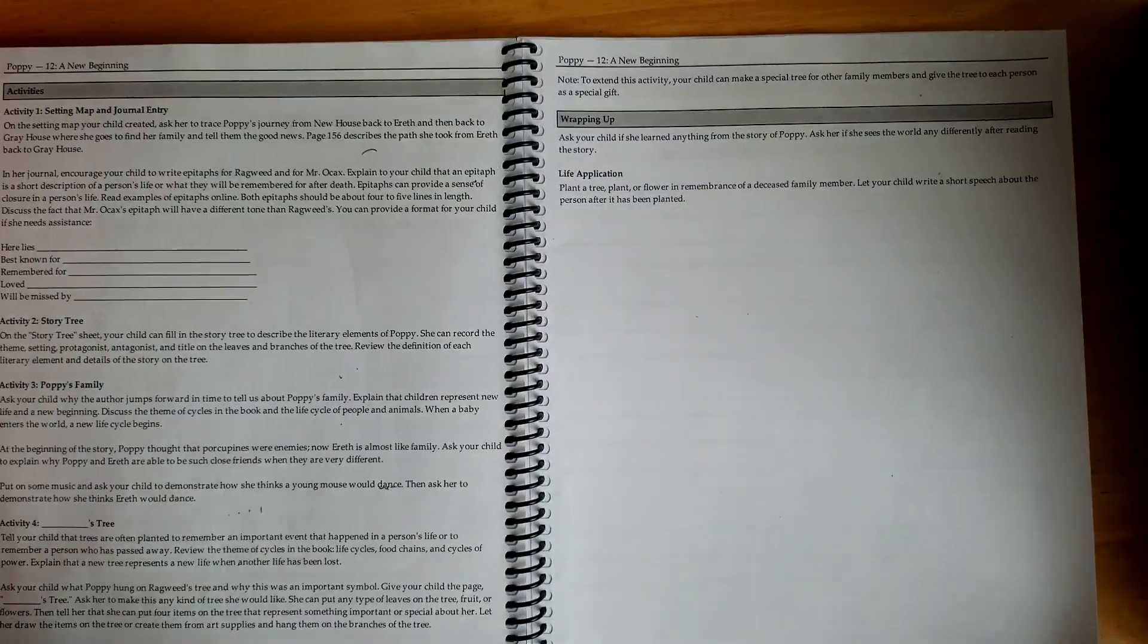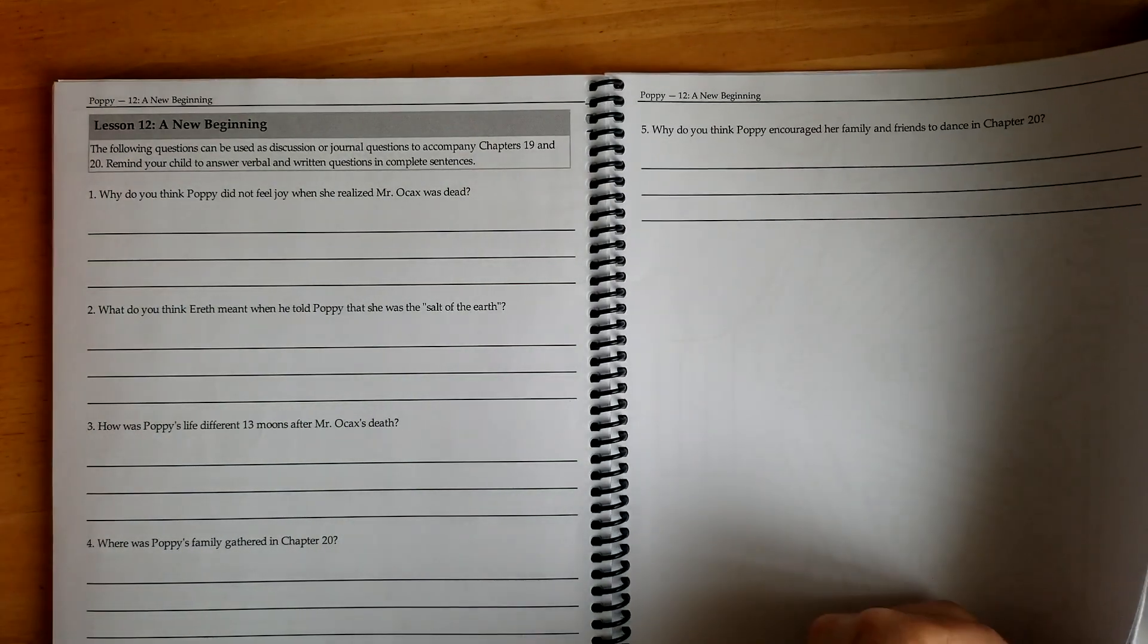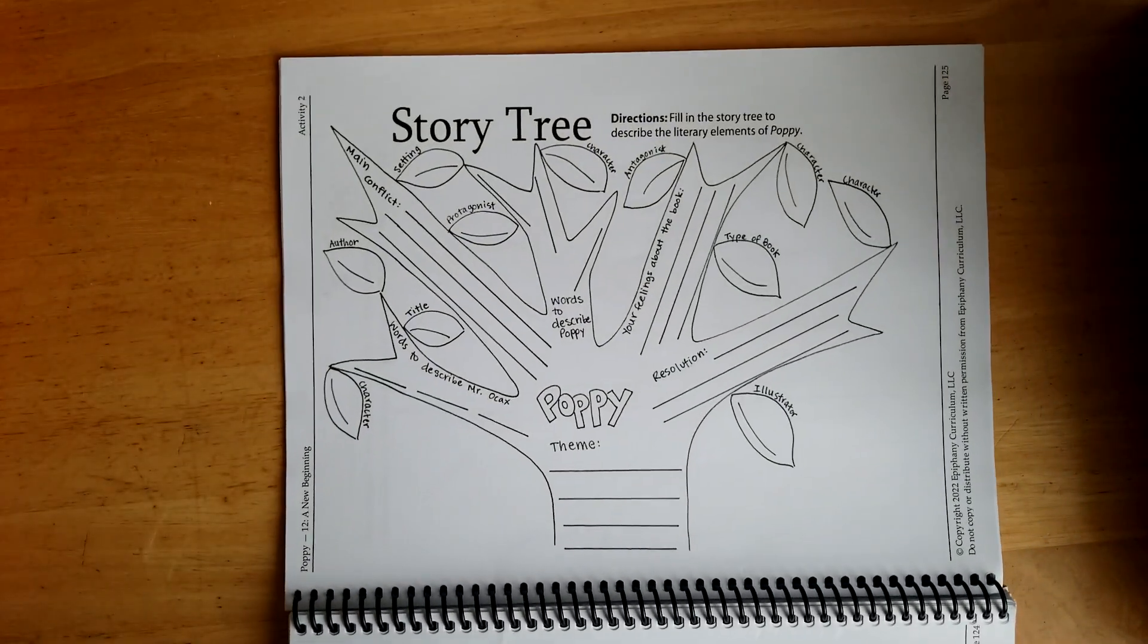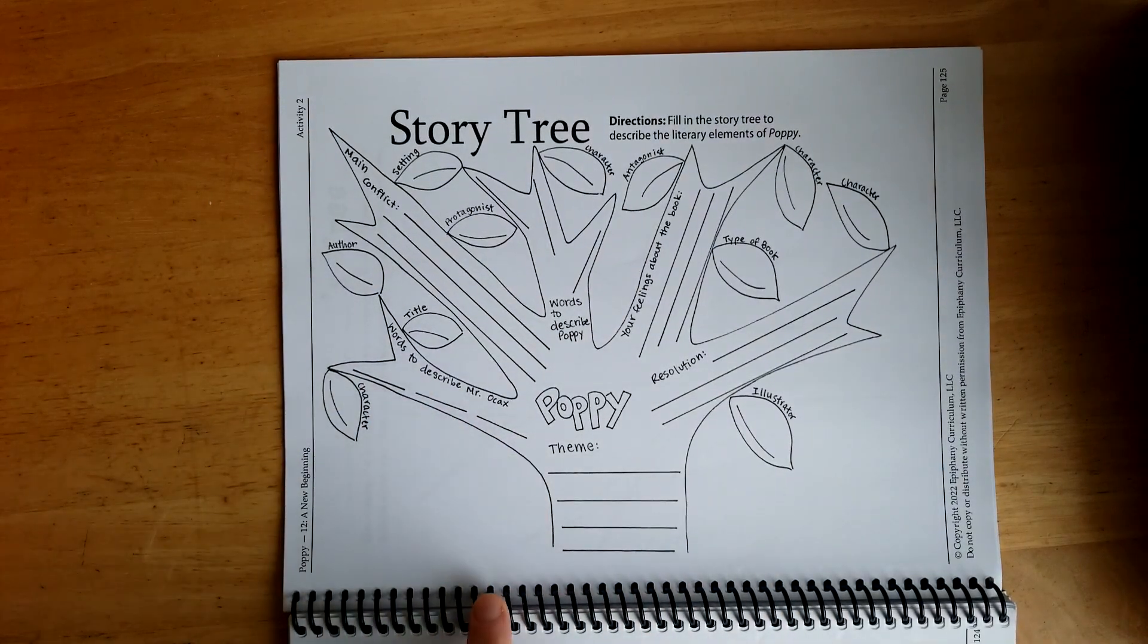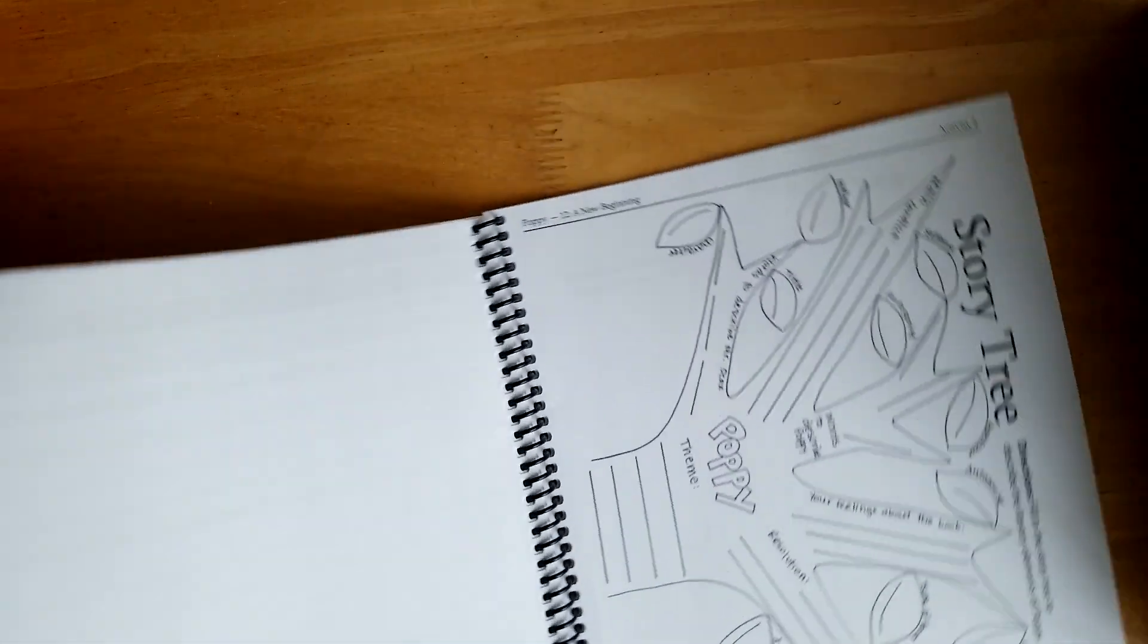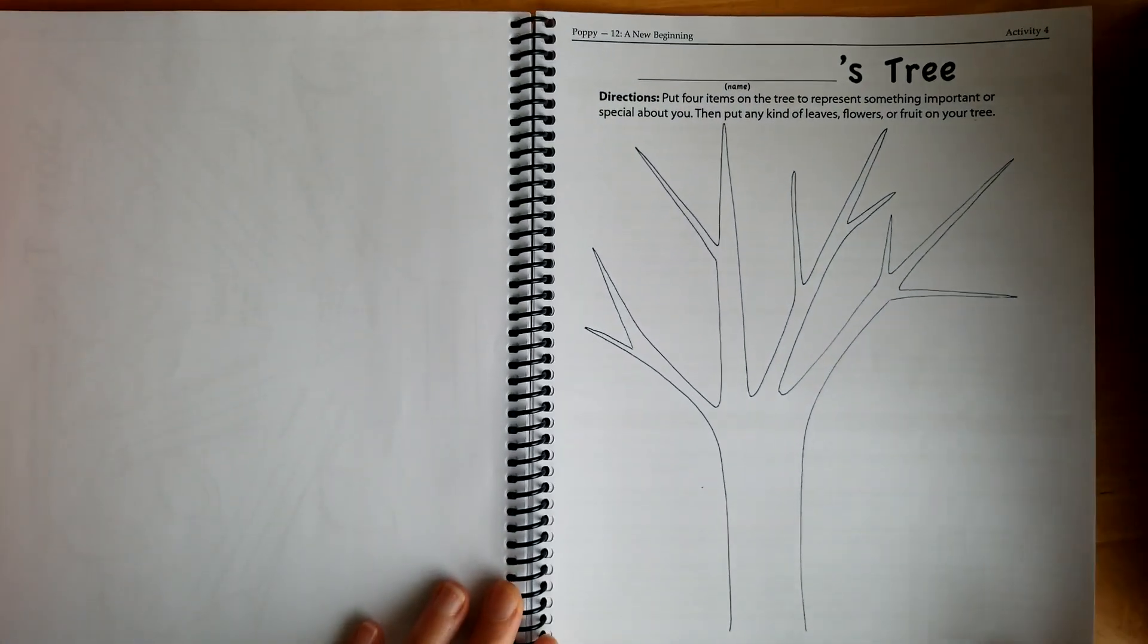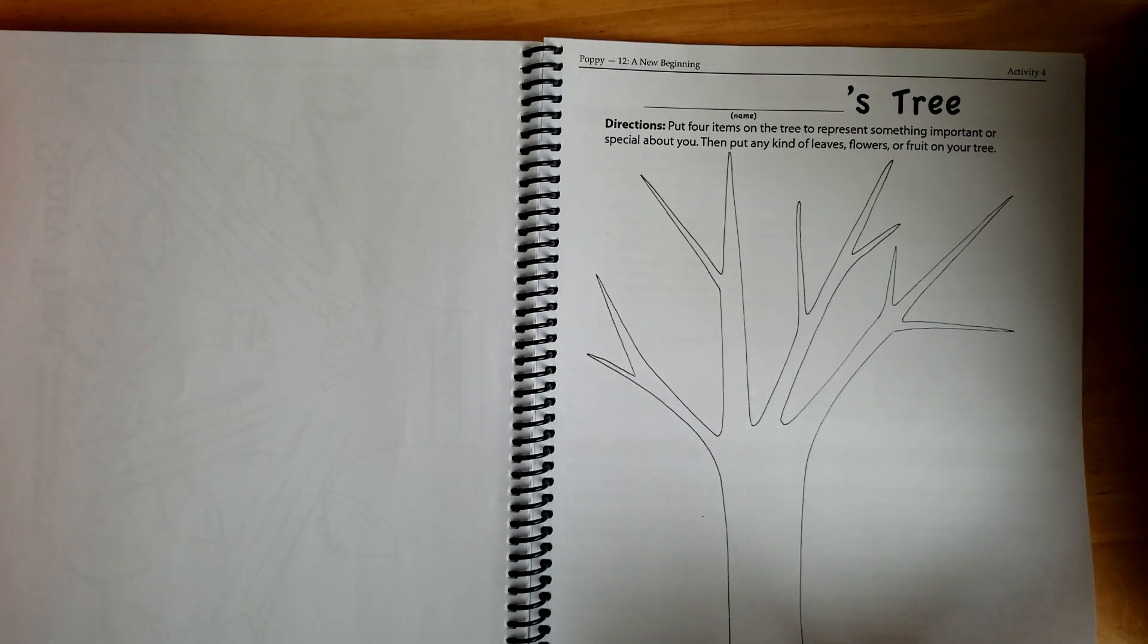New beginnings. This was the last one. Question and a story tree. She added in story details. Words to describe Mr. Ocax, the theme, resolution, illustrator, characters, antagonist. She liked that. And then she got to make her own tree and put things on it that were important to her.